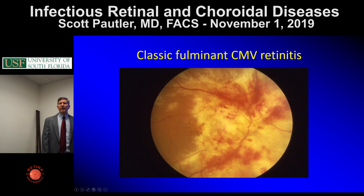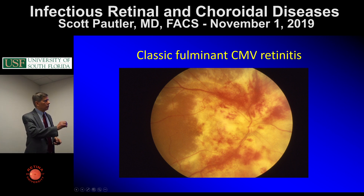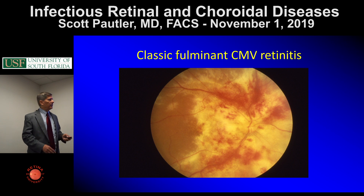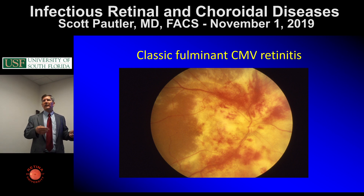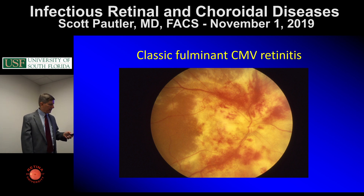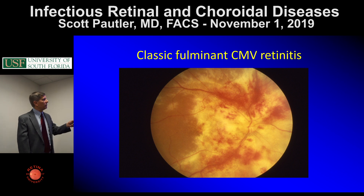Here is the classic fulminant CMV retinitis. You get the retinal opacification — it often extends along the vessels, you get the vitritis and hemorrhage. It often starts posteriorly but can be peripheral and slowly creeps. Depending upon how bad the immune system is, it may come on very aggressively or present with months of floaters and decreased vision. It can also be seen in transplant patients on immunosuppressive medication.